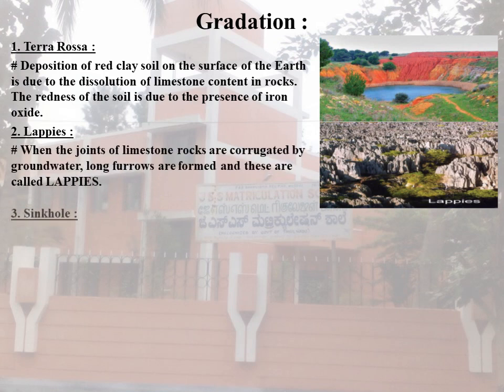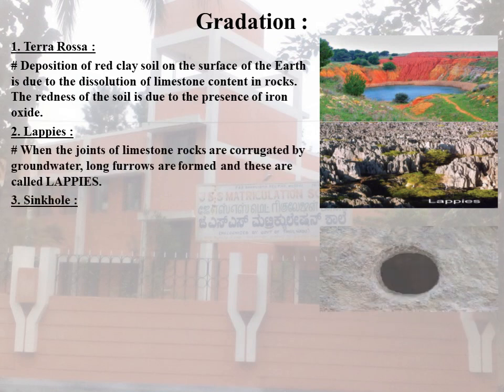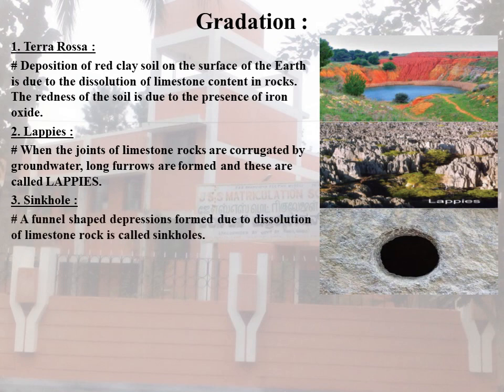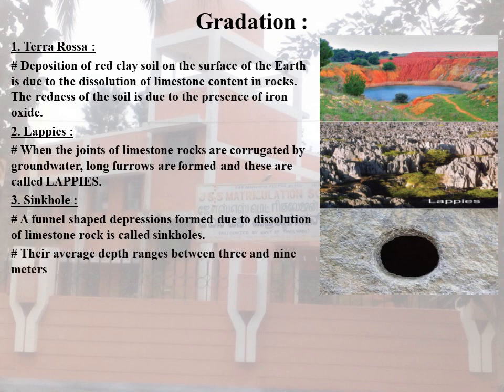The third one is Sinkholes. A funnel-shaped depression formed due to the dissolution of limestone rock is called a sinkhole, as shown in the picture on the right side of your slide. The average depth ranges between 3 to 9 meters. The world's deepest sinkhole is in China's Xiaozhai Tiankeng at 2,172 feet.